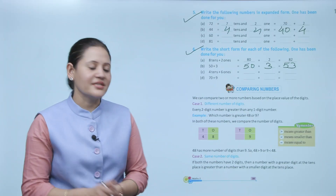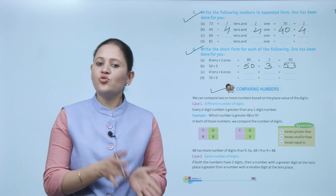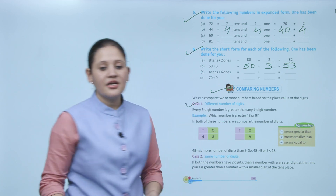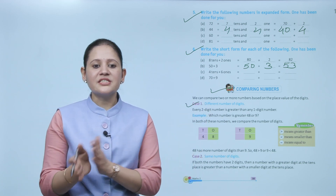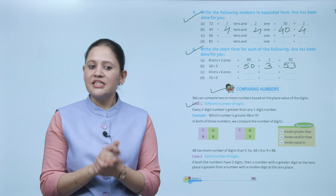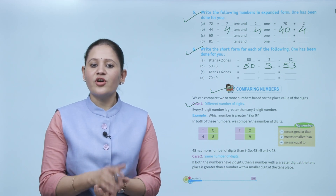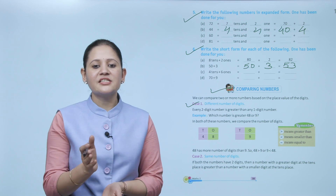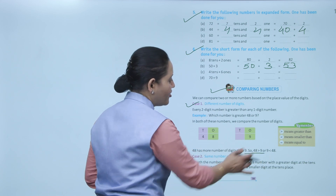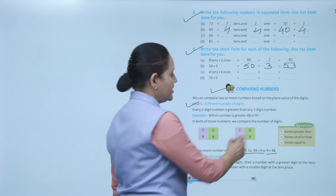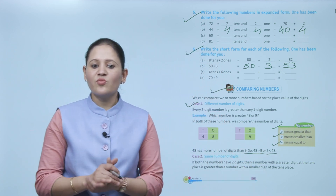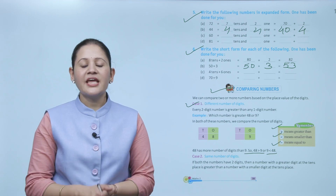Next: comparing numbers. We can compare two or more numbers based on the place value of digits. Case 1 — different number of digits: every two-digit number is greater than a one-digit number. For example, which is greater — 48 or 9? 48 is a two-digit number and 9 is a one-digit number, so 48 is greater than 9. We use greater than, less than, and equal signs. 48 has more digits so it is greater.